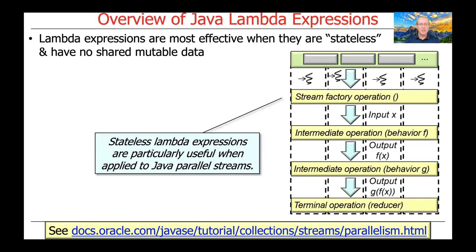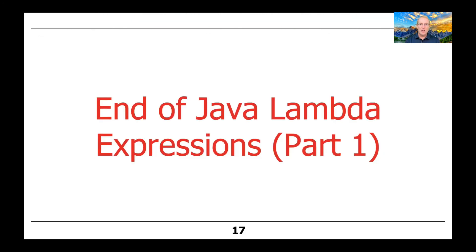Stateless Lambda expressions are particularly useful when they're applied in the context of Java parallel streams. We'll talk about parallel streams in other videos and contexts later. But for right now, just be aware that if you keep your Lambda expressions stateless, you'll have a much easier time being able to scale them up on modern multi-core processors. So that's the end of our first part of the discussion of Lambda expressions in Java functional programming.